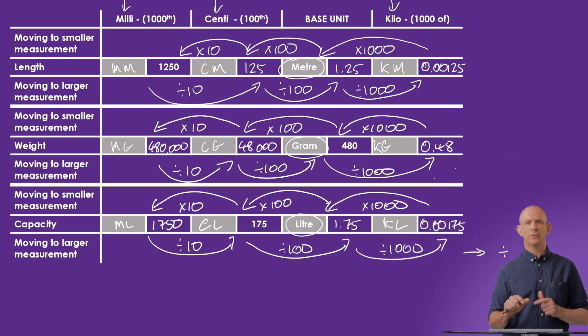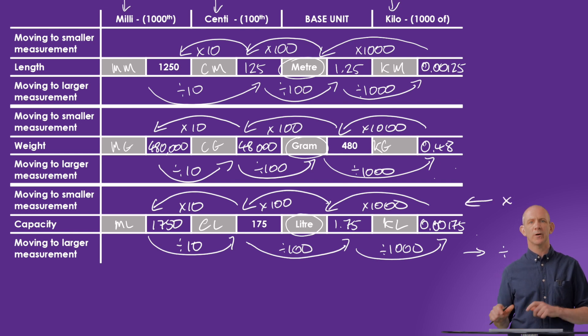Remember: when converting from a smaller unit of measurement to a larger one, you divide, as you'll need fewer units. For the reverse direction, you multiply.